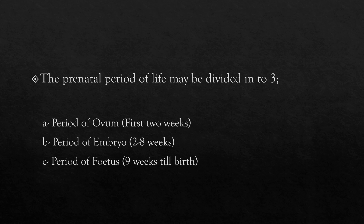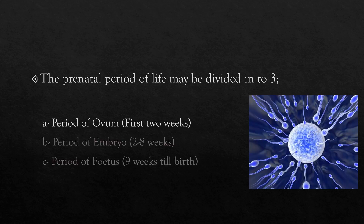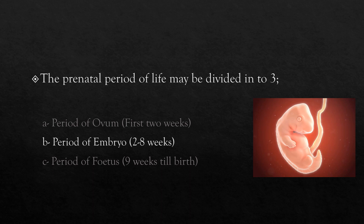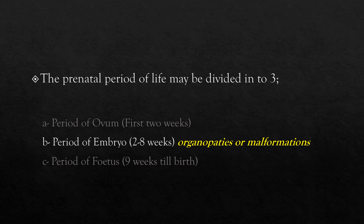The prenatal period of life may be divided into three: the period of ovum, the period of embryo, and the period of fetus. During the ovum period, the ovule inserts into the inner surface of the uterus. After fecundation, the ovule takes the name zygote and at the end of the second week, its length is only 1.5 mm. During the period of embryo, the frame of all the organs and tissues are formed — also called the organogenesis phase. Cells continue to multiply, differentiate, and organize. Disturbances during the organogenesis phase may lead to irreversible organopathies or malformations like cleft lip, palate, or tooth absence and malformations.